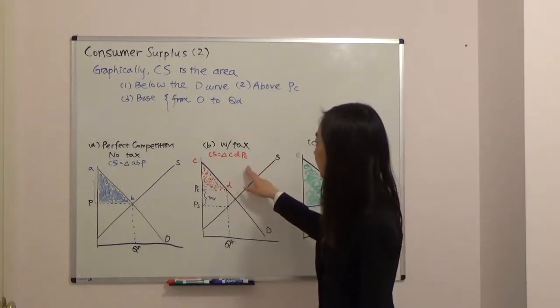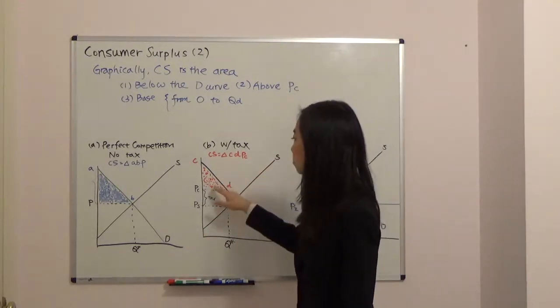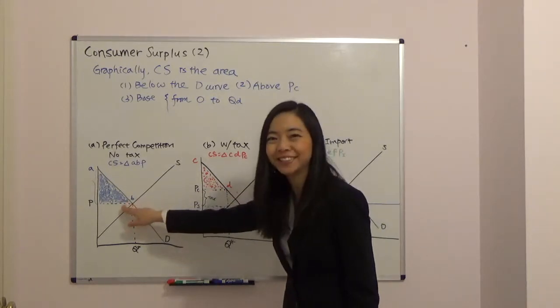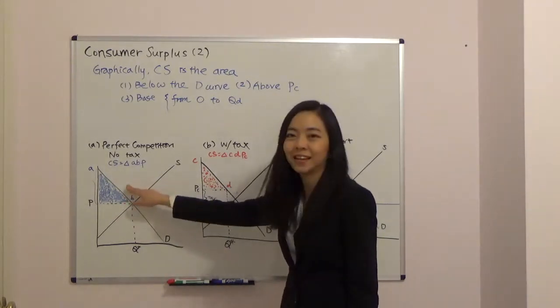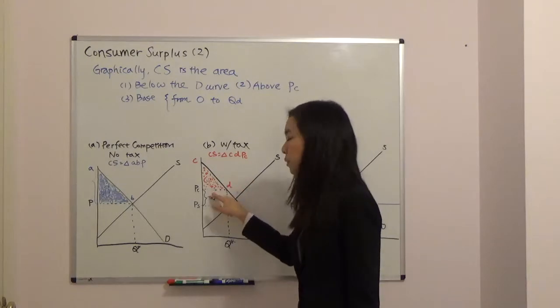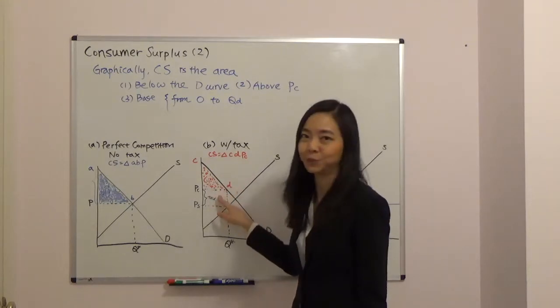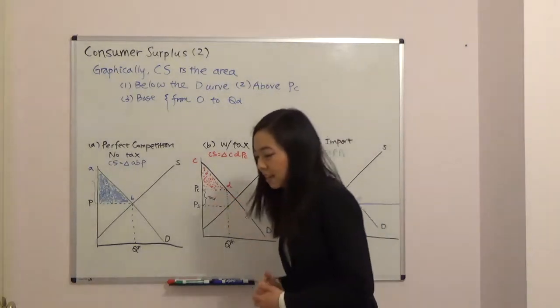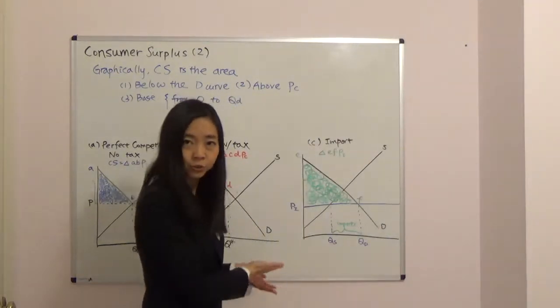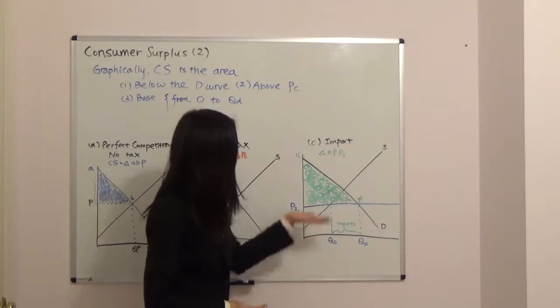You can see that with tax, consumer surplus is less than before. Without tax your consumer surplus is higher, but with tax your consumer surplus is now smaller.